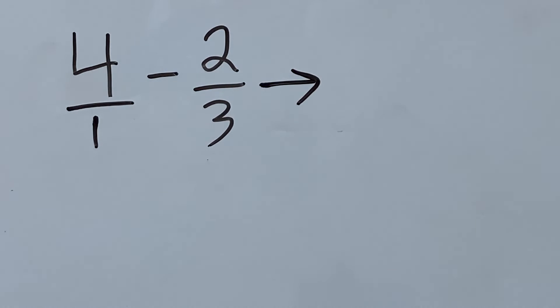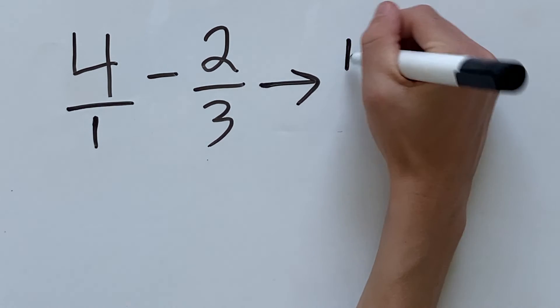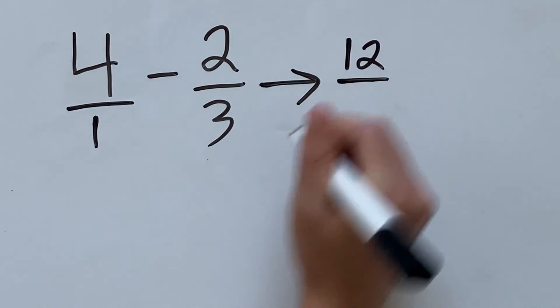So, to rewrite our problem with that least common denominator, we have to multiply this denominator of 1 by 3. And we also have to multiply the numerator of 4 by 3. So, 4 times 3 is 12, and 1 times 3 is 3.